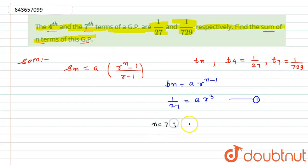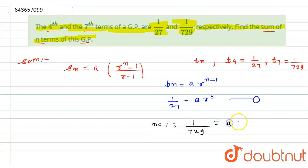Similarly, putting n = 7: T7 = 1/729 = a·r^6. Let this be equation number 2.